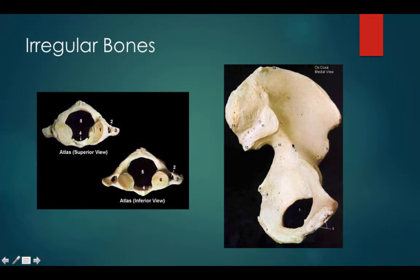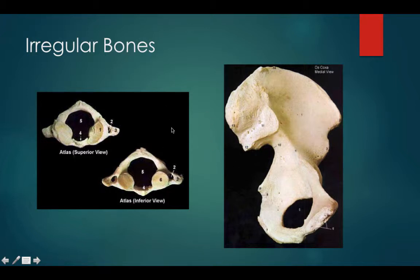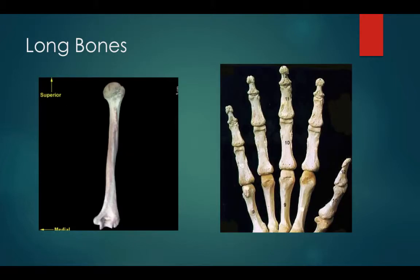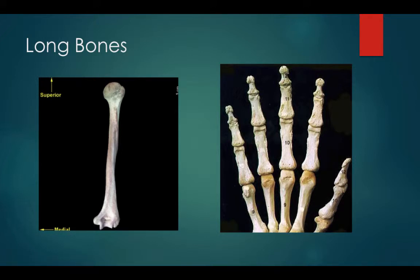Irregular bones come in all different shapes and sizes. Here on the left-hand side we have the cervical vertebrae — the atlas. On the right-hand side we have the left os coxae. Other examples may be other vertebrae or the sphenoid bone, which is a skull bone shaped like a bat or a butterfly. Now let's talk about the long bones. Here on the left-hand side we have the humerus, and on the right-hand side we have the phalanges and metacarpals. Other examples of long bones may be the femurs or the phalanges of the toes. In addition, the clavicle is actually considered a long bone.